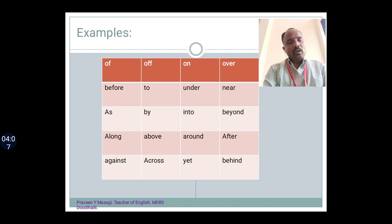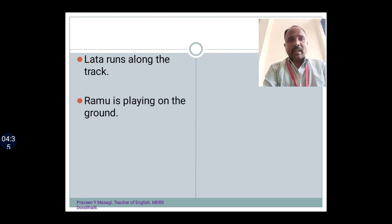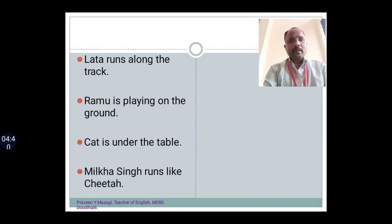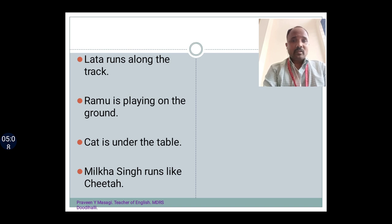These series of parts of speech — parts 1, 2, and 3 — are intended to give you a brief introduction related to parts of speech. In the next videos, I am going to discuss in detail individually on parts of speech. Now let's see the usage of prepositions. Here are some sentences: Lata runs along the track. Ramu is playing on the ground. Cat is under the table. Milkha Singh runs like a cheetah. Try to find out the prepositions using the definition we discussed. The definition says it shows the relationship between a noun and pronoun with another noun and pronoun. We also know the position is between verb and noun or pronoun.